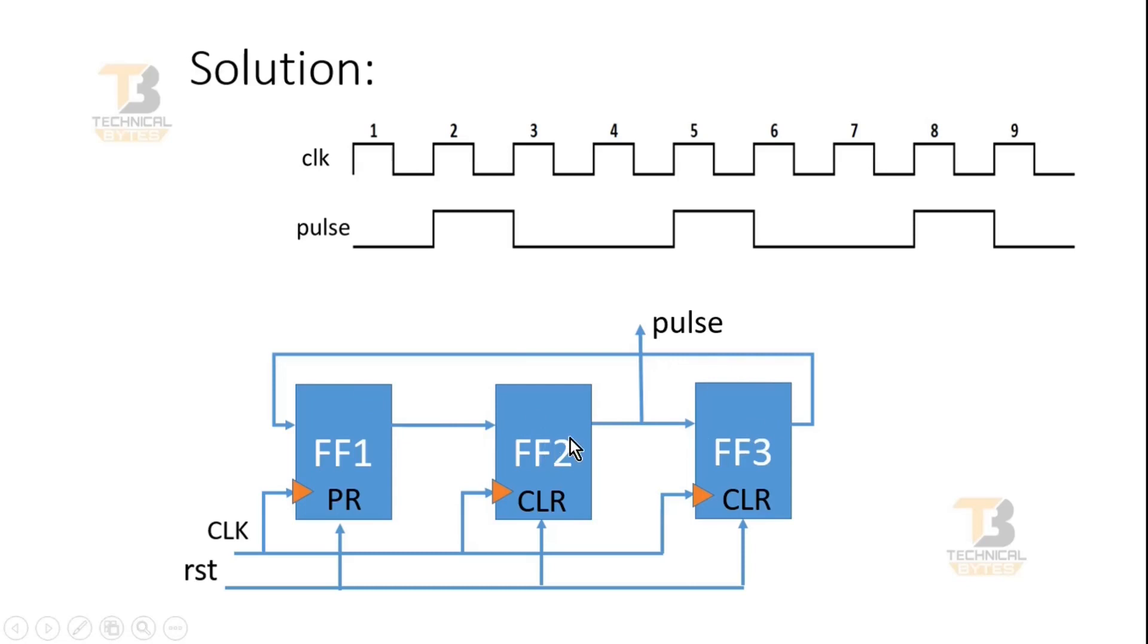And at a time, output of only one flip flop will be high. And at that time, output of other two flip flops will be always 0. As soon as the reset is released, the output of first flip flop will be high. And the output of second flip flop will be 0. And the output of third flip flop will also be 0. That means 0 is the expectation as per our pulse signal also.